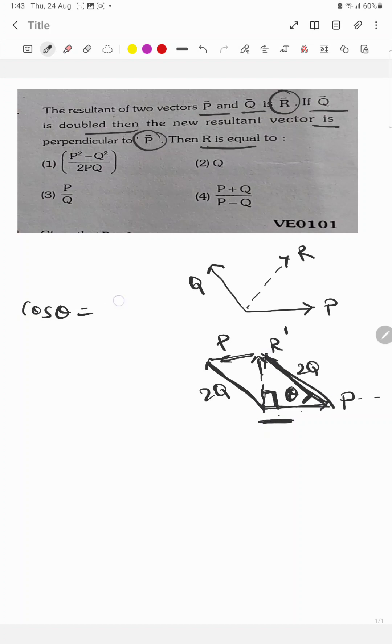Which equals P upon 2Q. Now this angle, let us take this as theta dash. As they both are parallel, this angle will be equal to this angle. The angle between 2Q and your P vector will be equal to this as they both are parallel.